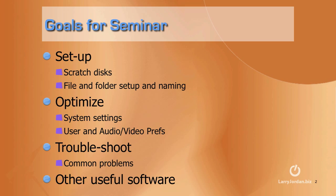The goals for our seminar today cover four areas. I want to talk about how to set up your system, discuss what scratch disks are and how to set them up, and show you how to set up your files and folders — where they should be stored, what should go in them, and how to name them. Then we'll shift gears and talk about optimizing your system, working with the four preference menus inside Final Cut: system settings, audio and video preferences, and user preferences. I'll show you what you need to know to set your system up for maximum performance with the least amount of hassle.